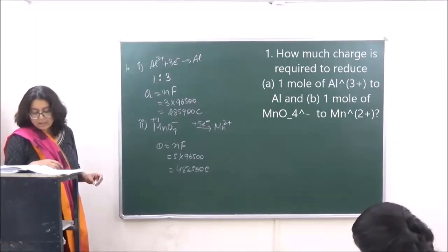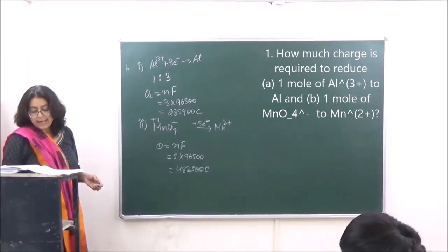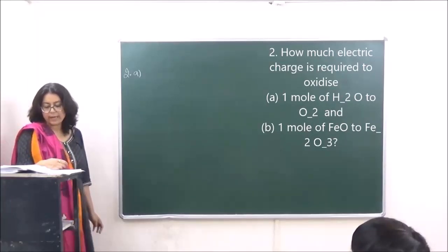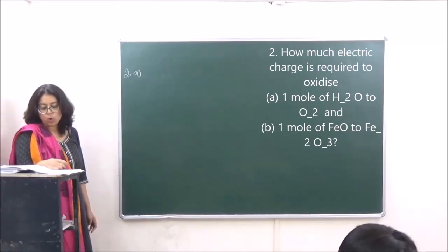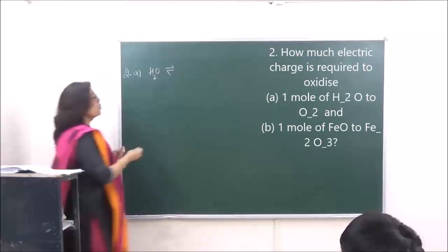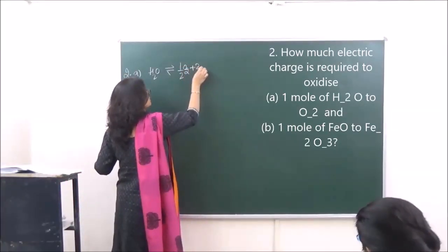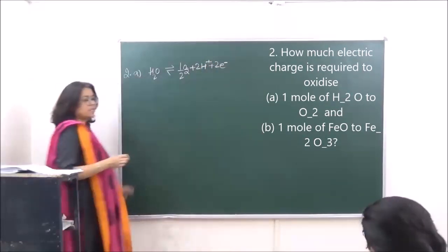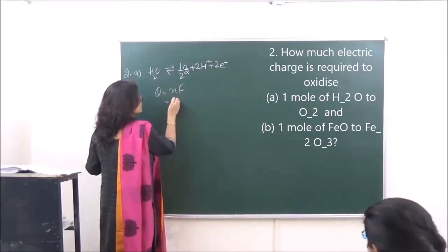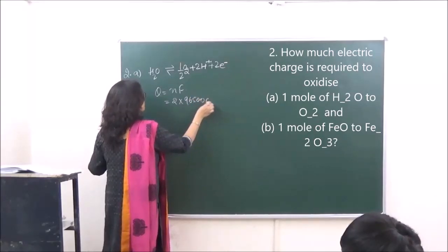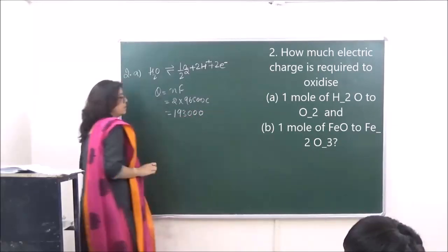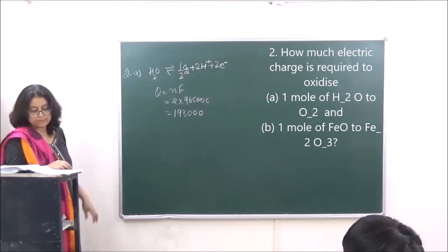Question 2: How much electric charge is required to oxidize 1 mole of H₂O to O₂, and 1 mole of FeO to Fe₂O₃? For H₂O to O₂: the reaction gives half O₂ plus 2H⁺, and the electron exchange is 2. So Q equals NF equals 2 into 96500, which comes to 193000 coulombs.